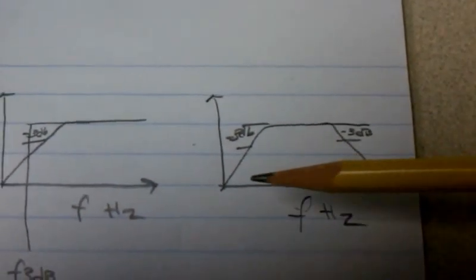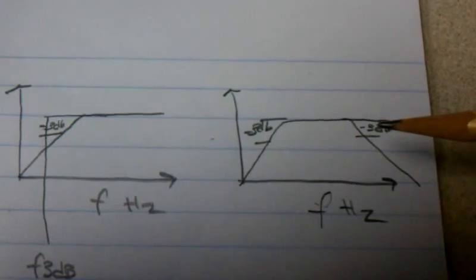And in a band pass you can see we have two 3dB points.